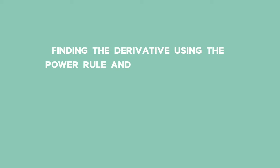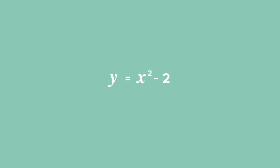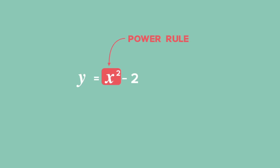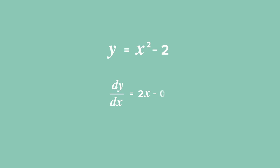Example 2: Finding the derivative using the power rule and the constant rule. Given y equals x squared minus 2, find dy by dx. Solution: Using a combination of the power rule and the derivative of a constant rule, dy by dx equals 2 times x to the power of 2 minus 1, which is 2x, minus the derivative of the constant 2, which is 0. So dy by dx equals 2x.